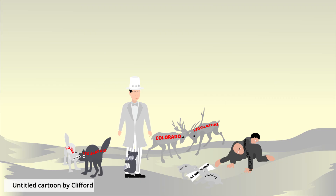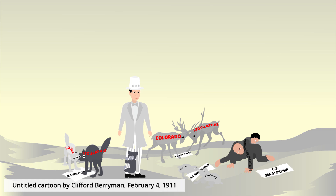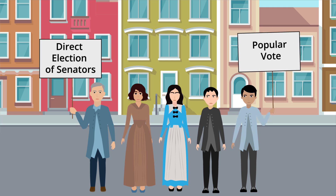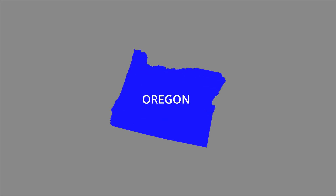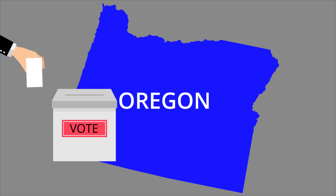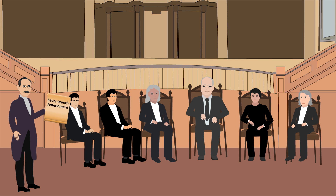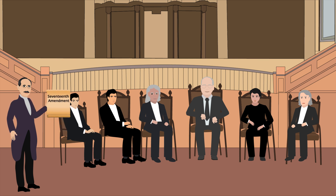After the Civil War, disputes among state legislators over Senate elections led to deadlocks, leaving some Senate seats empty for long periods of time. Therefore, reformers in many states began to call for changes to the system of electing Senators. Oregon established measures in the early 1900s to allow Senators to be elected by popular vote, and several other states later followed suit. In 1911, popularly elected Senator Joseph Bristow from Kansas proposed the 17th Amendment as a resolution.